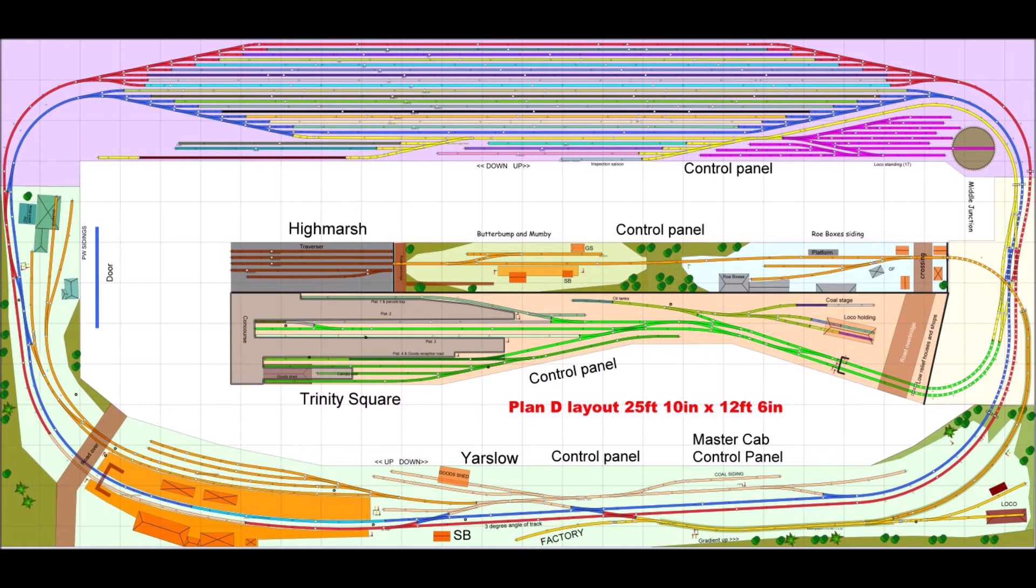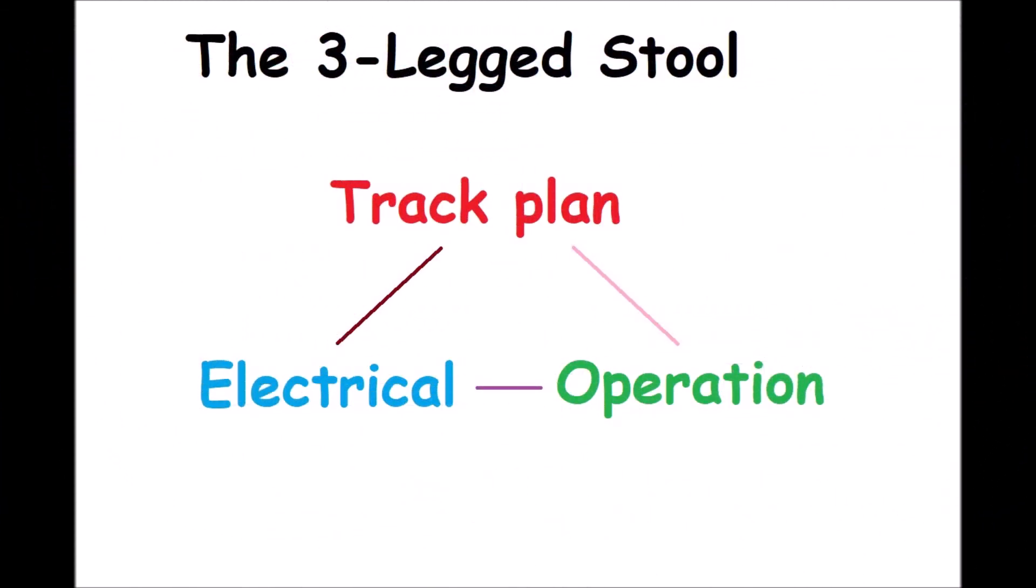So now you can start to understand why Trinity Square Station is a different section from the goods yard sidings. The Trinity Square operator can be shunting his wagons backwards and forwards, whilst the operator perhaps in the storage area can take control of the green and yellow sections, and that passenger train can depart. If Trinity Square was all under one controller, the shunting would have to stop and the engine would have to be isolated. Clearly, that's both cumbersome and unprototypical. Thus, you can see how the triangle of track plan, your operational wants, and the electrical systems have to fit together in order that the layout can work the way you want it to work.